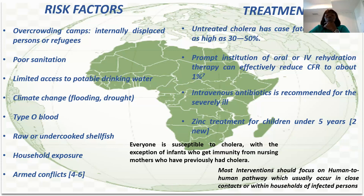Everyone is susceptible to cholera, except infants, because a mother who has had cholera before can pass immunity to the infant — the infant gets immunity from the mother who has already recovered from cholera.